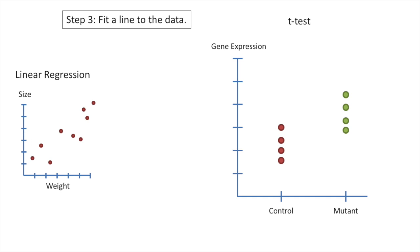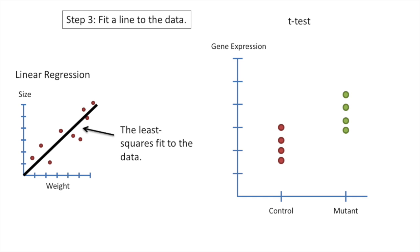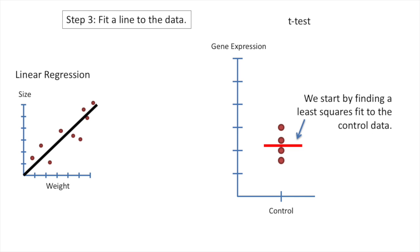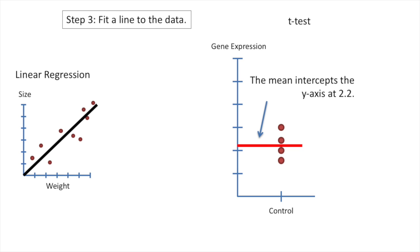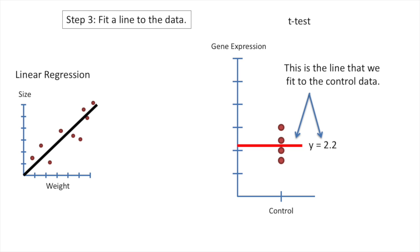Step 3: fit a line to the data. Note, this is when we start caring about the x-axis again. On the left side, we have the least squares fit to the data. However, how do we do a least squares fit to a t-test? Let's start by just fitting a line to the control data. It turns out that the mean is the least squares fit. The mean intercepts the y-axis at 2.2. This is the equation for a horizontal line that intercepts the y-axis at 2.2. Thus, this is the line that we fit to the control data.